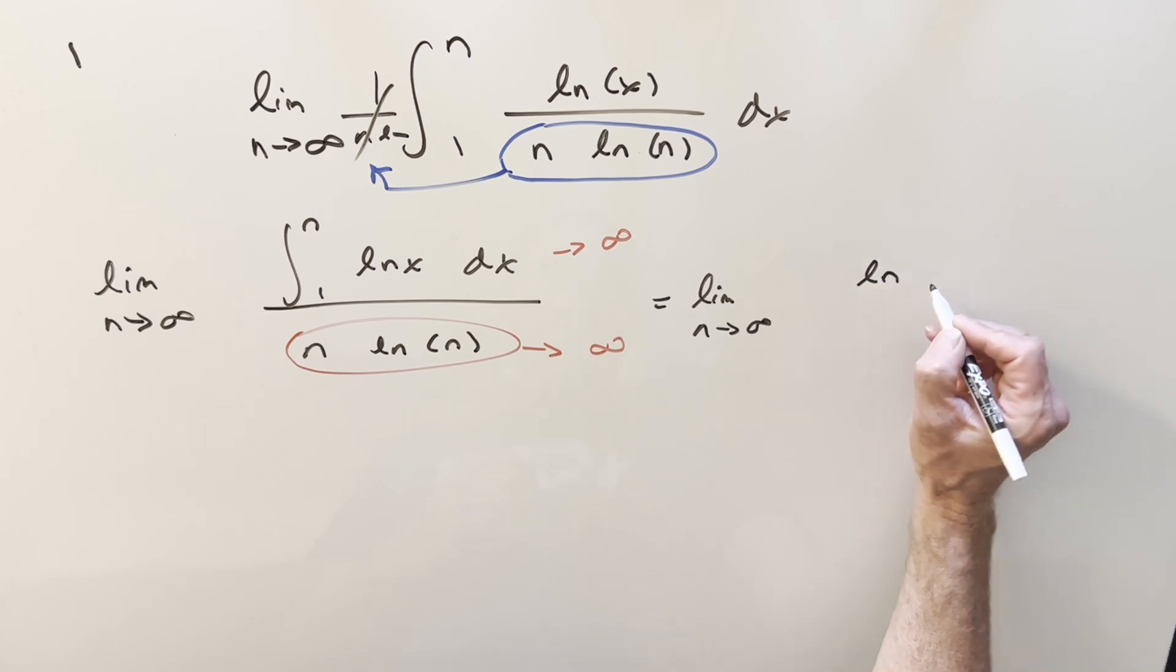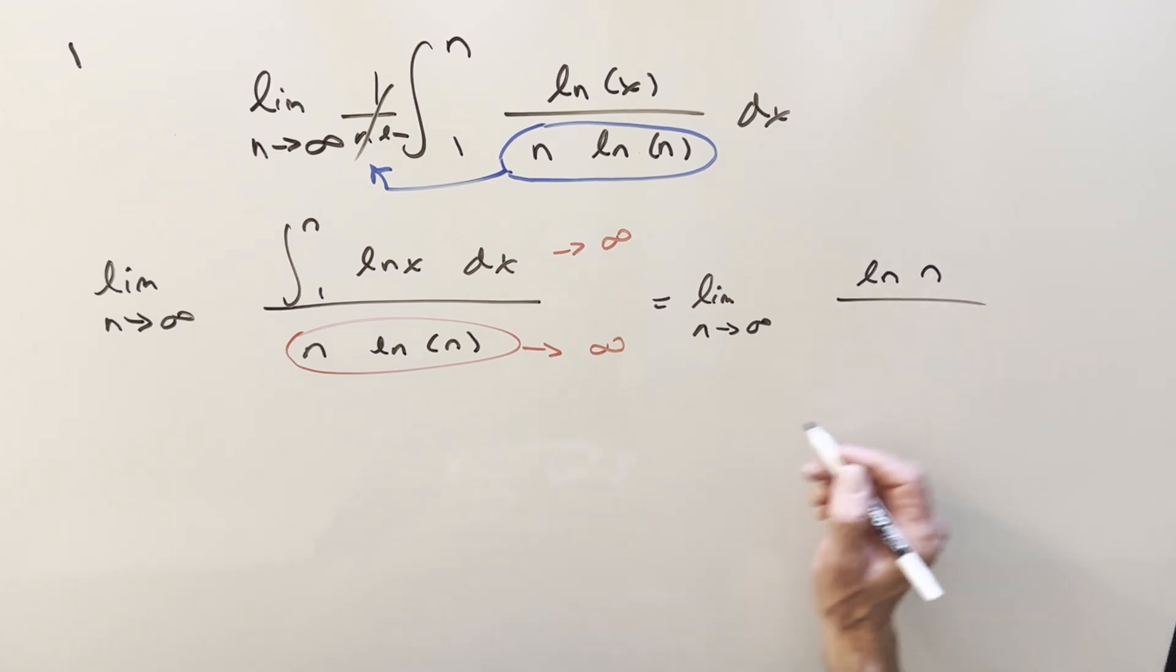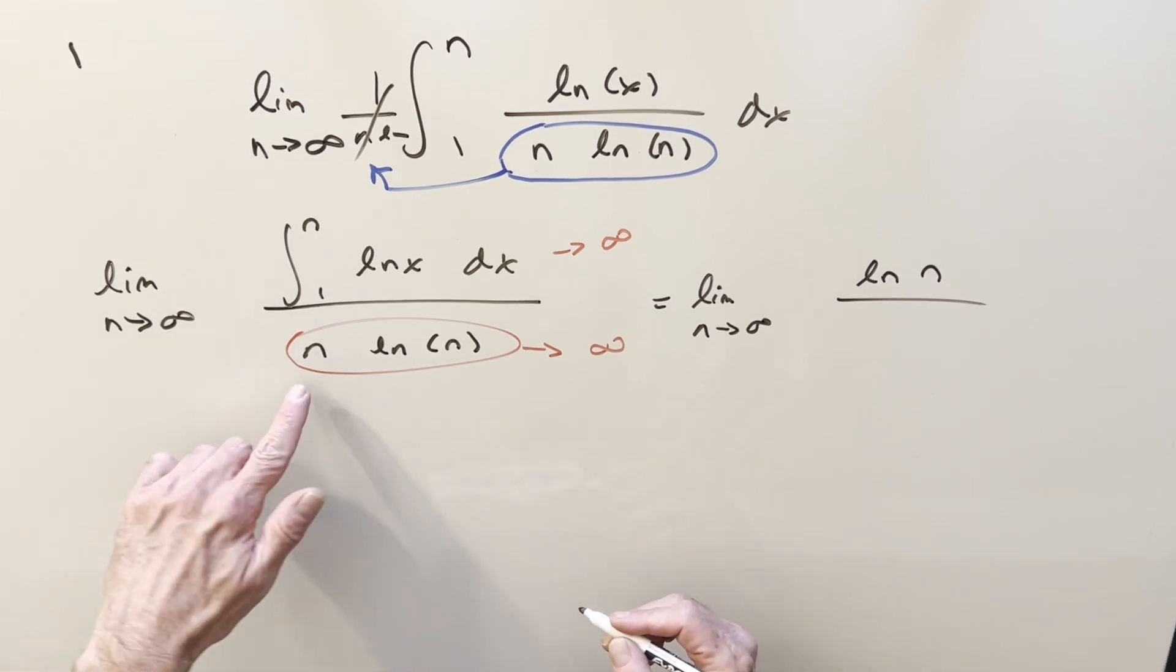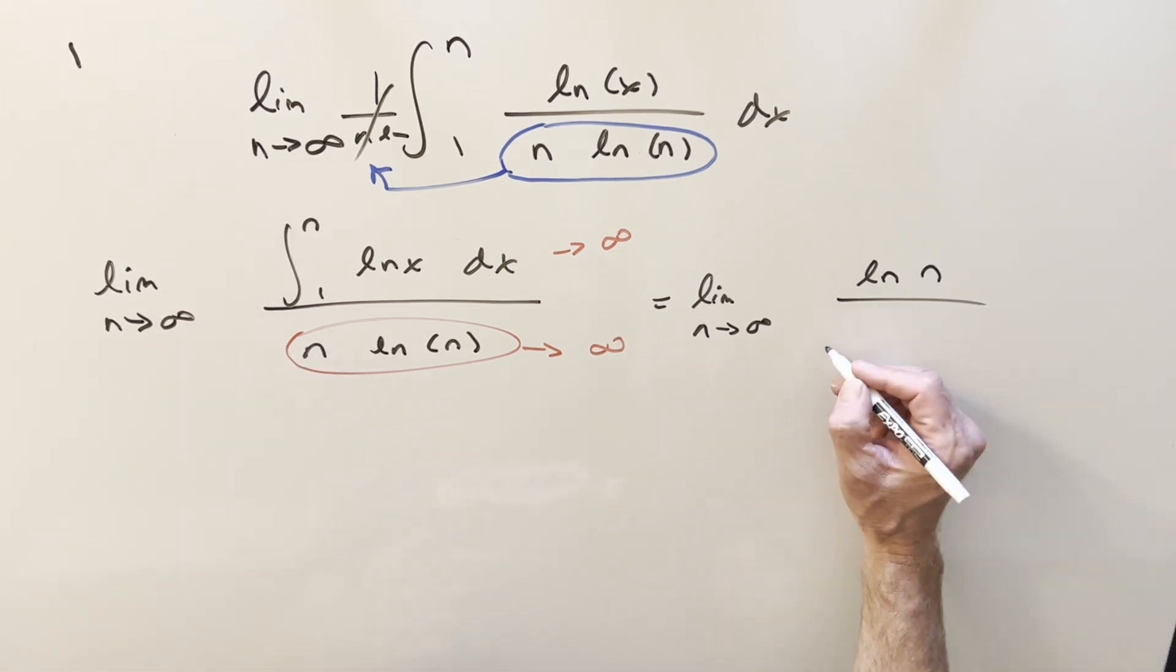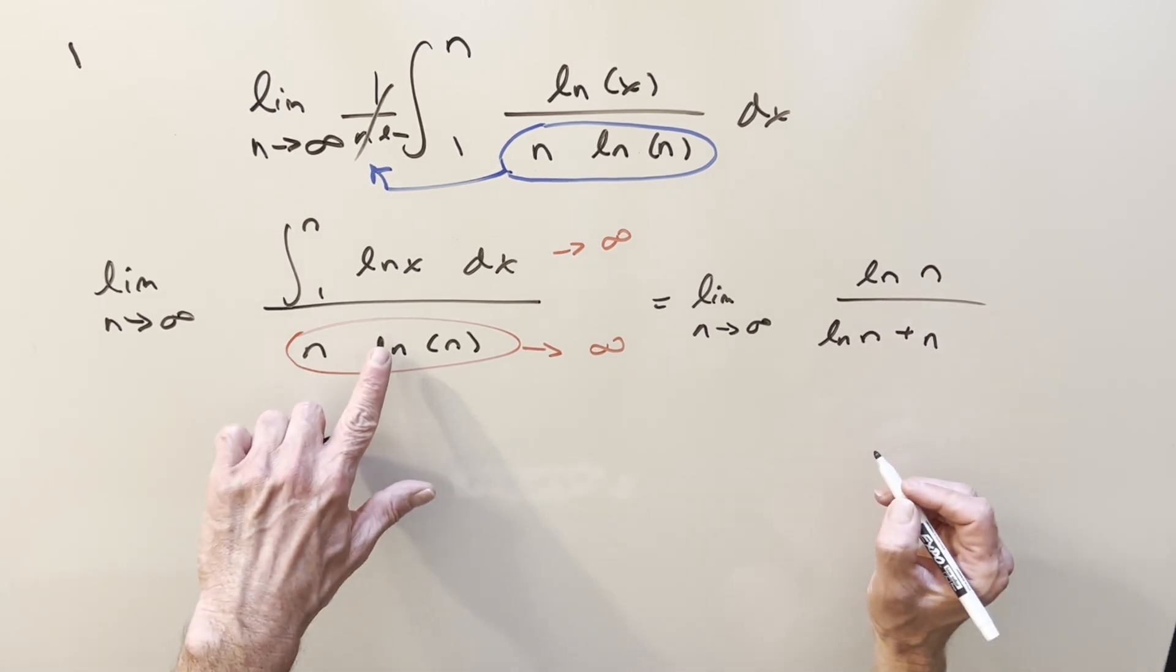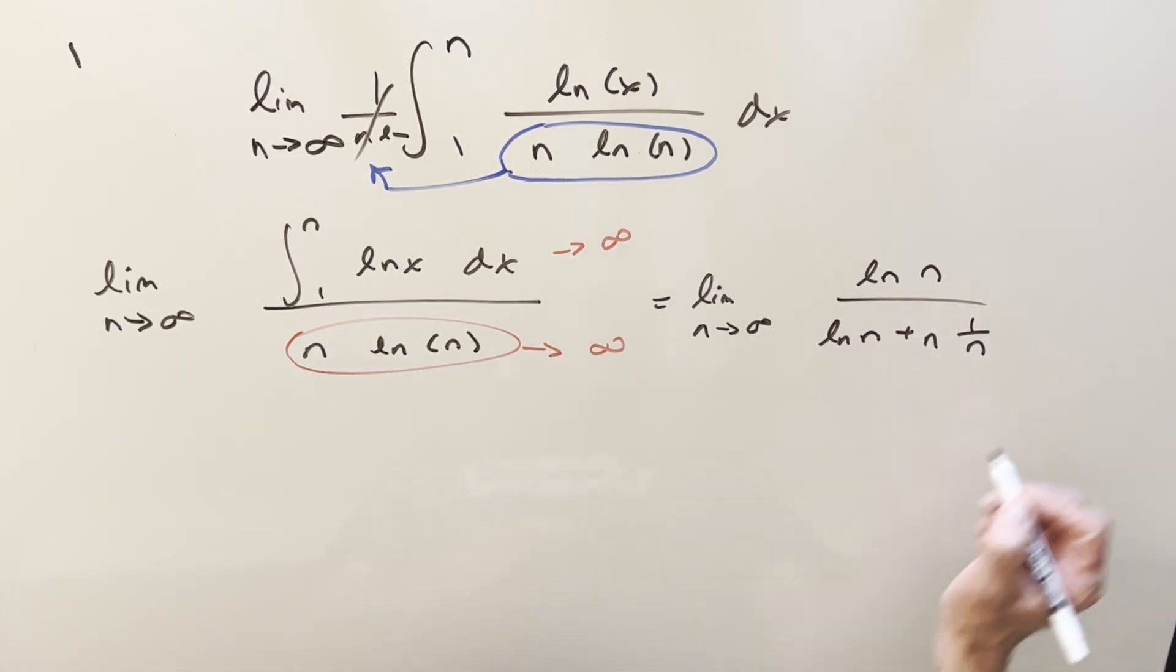And what's going to happen is we end up here with natural log of n over the derivative of the denominator with respect to n. It's going to be product rule. So first, derivative of n is 1, so we get natural log n plus n times the derivative of natural log n, which is 1 over n. But of course, n is going to cancel with 1 over n, and this is going to be just a 1 right here.